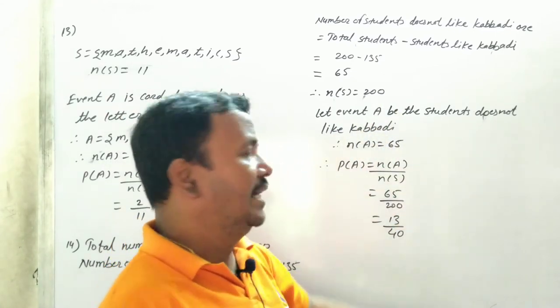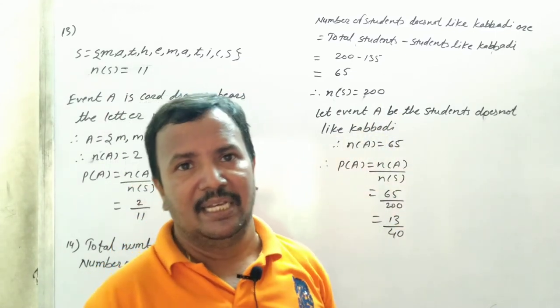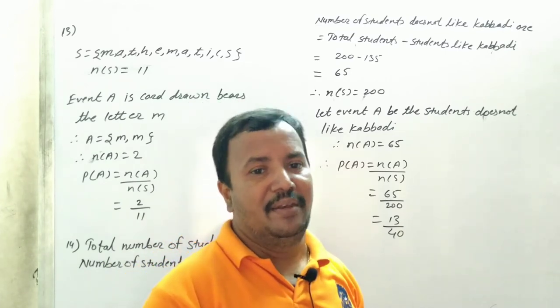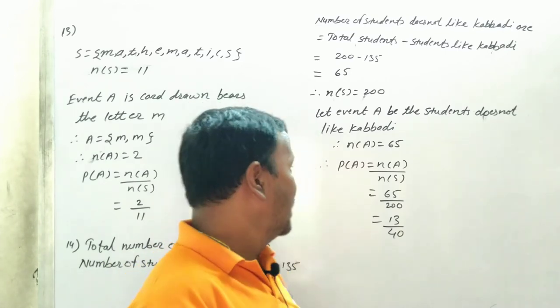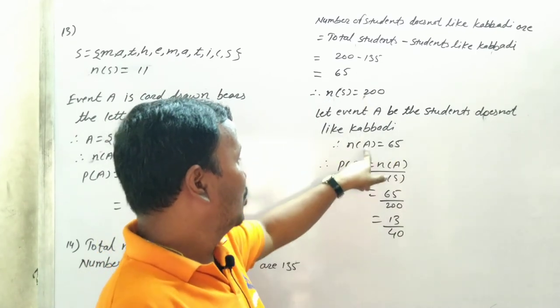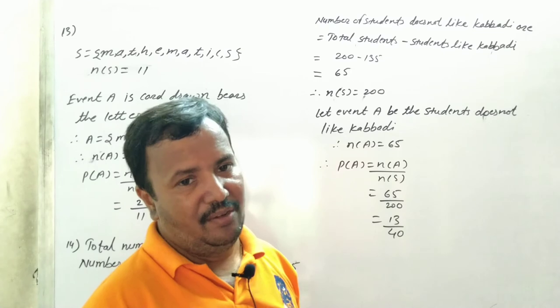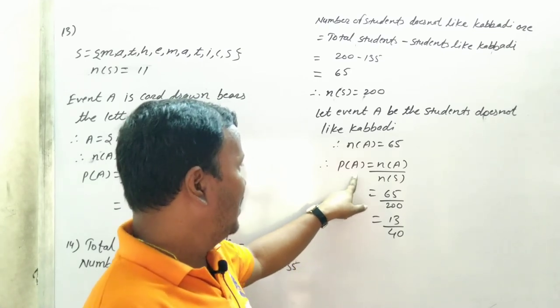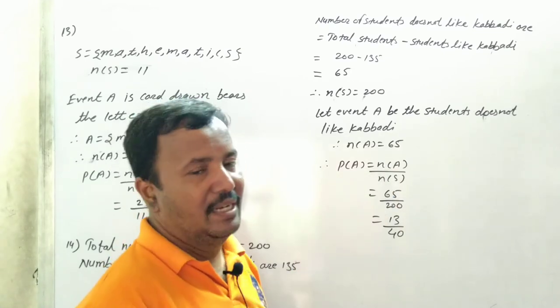the students does not like kabaddi. A is the event which tells us that the child does not like kabaddi. So how many are there? 65 we calculated above. So number of A is equal to what? 65.